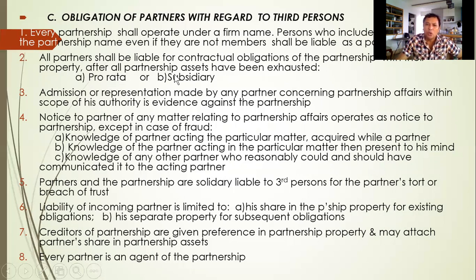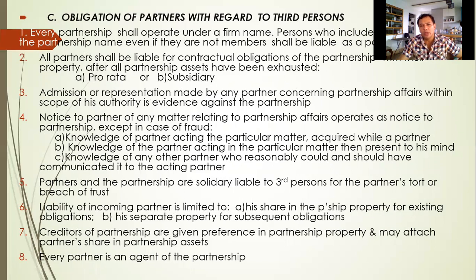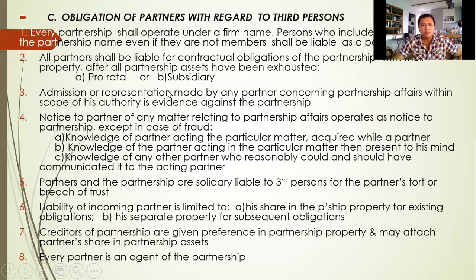Liability is either pro-rata, meaning proportionate, or subsidiary, meaning after all the partnership assets have been exhausted, then the partner's personal assets are used. Number three: admission or representation made by any partner concerning partnership affairs within the scope of his authority is evidence against the partnership — so partners must be careful about admissions or representations that could jeopardize the partnership. Number four: notice to a partner of any matter relating to partnership affairs operates as notice to the partnership.